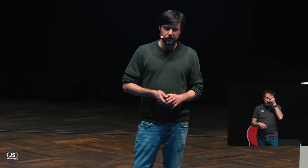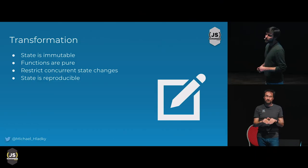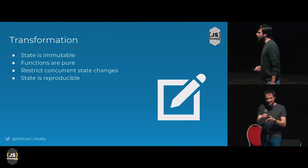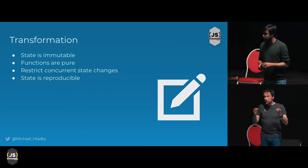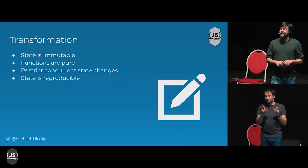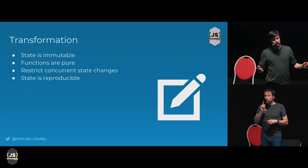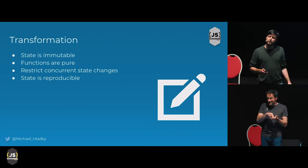Let's go on with the second chapter: state transformations. I have again four principles: state is immutable, functions are pure, restrict concurrent state changes — very important — and state is reproducible.